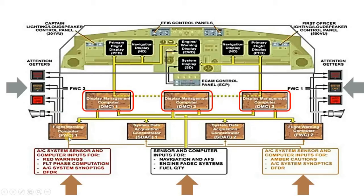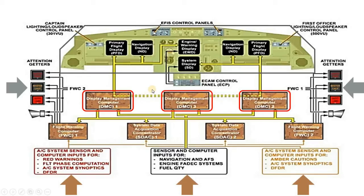The third element is the flight warning computers, which get information from different aircraft systems and display warnings on the flight deck. Warnings can be visual or oral. Oral warnings include different warning voices and tones. For visual displays, there are three light types: master warning lights in red, caution warning lights in amber, and white or green lights for status.